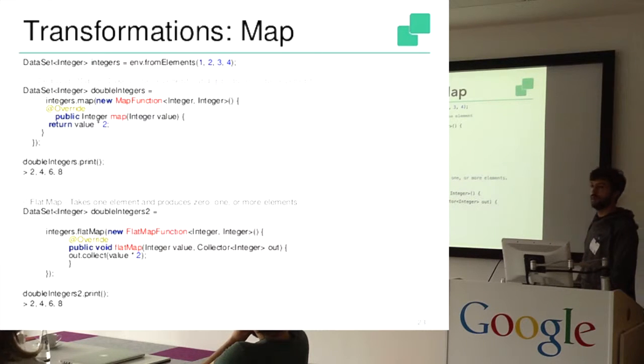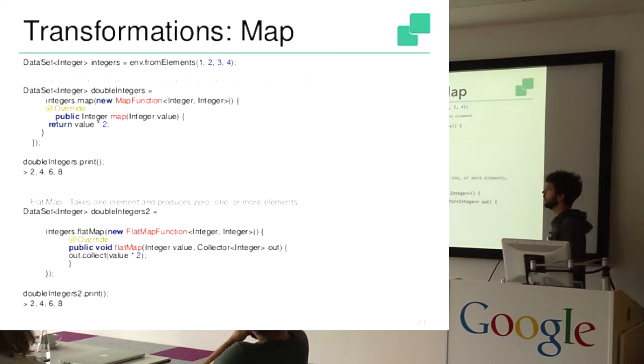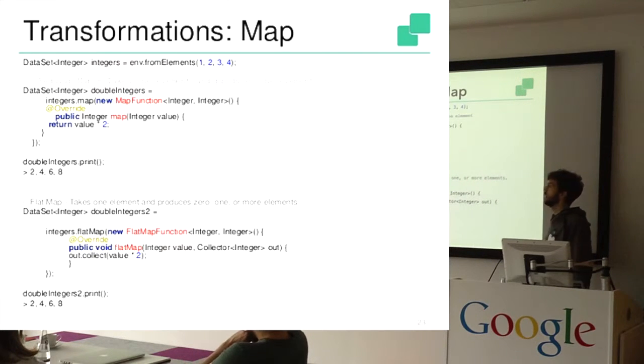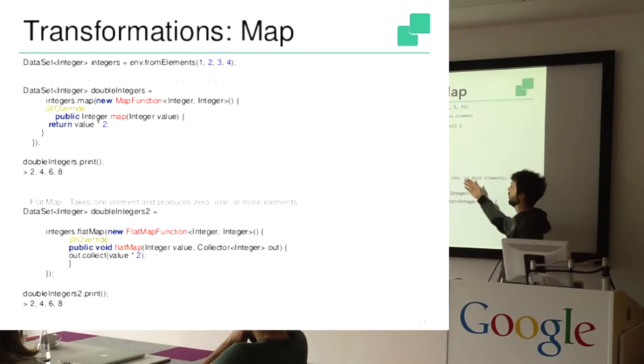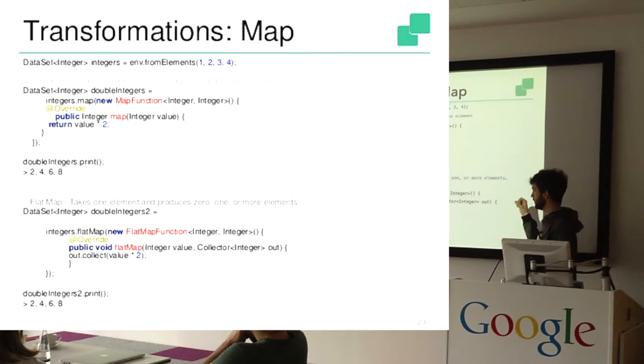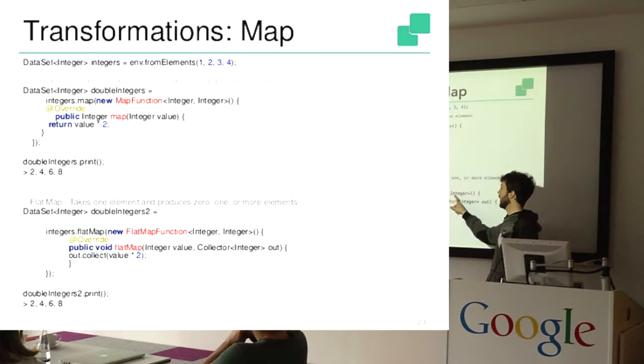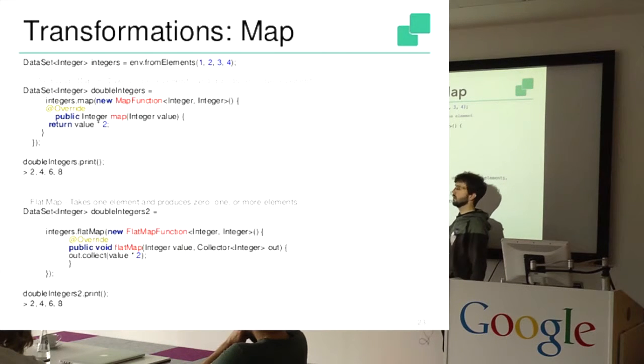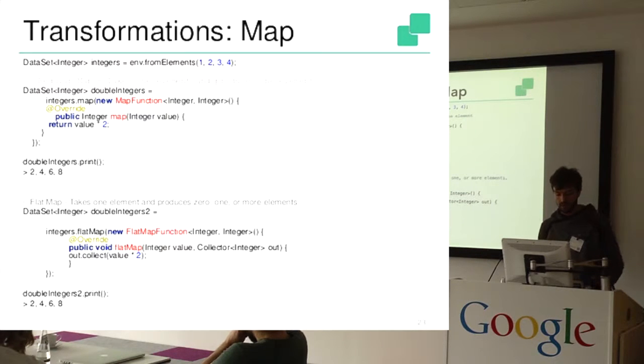Then, one very simple transformation is the map. Flink implements two kind of map functions. The kind of traditional map where you just receive a value and transform it and emit another value, but of the same type. So here for example we receive a list of integers and multiply them by two. And in contrast to that, we have the flat map, which is a kind of more general implementation of a map, which can receive actually an input and an output type, and it doesn't have to be the same. So here we do the same as the traditional map by collecting the values. Here we're multiplying the integers by two. But you could also, for example, call out.collect two times and emit multiple results there. So it's a bit different.